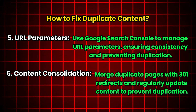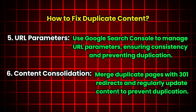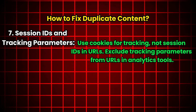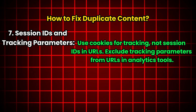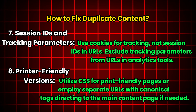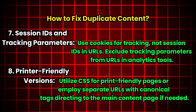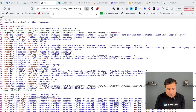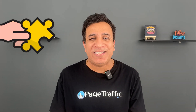Content consolidation: merge similar or duplicate pages into one comprehensive page, and use 301 redirects for old URLs. Regularly audit your content to prevent duplication. Session IDs and tracking parameters: avoid using session IDs in URLs — use cookies for tracking instead, and exclude tracking parameters from URLs in analytical tools. Printer-friendly versions: use CSS for print-friendly pages instead of creating separate URLs. If separate URLs are necessary, use canonical tags pointing to the main content page. Now let's see an example — I'm going to open our website digital white label agency and view the source. You can see the canonical tag we have implemented here to avoid duplication.